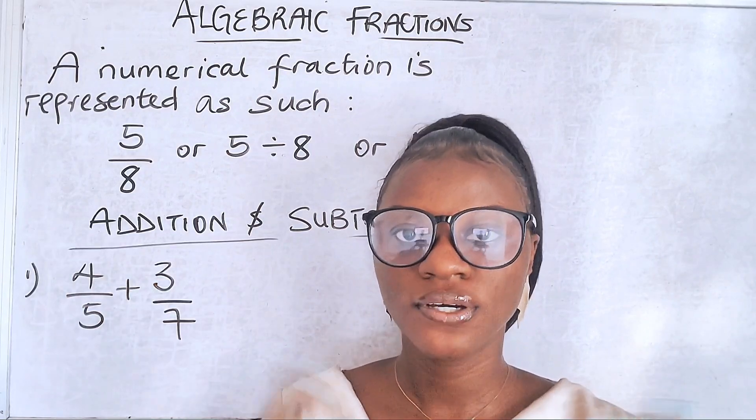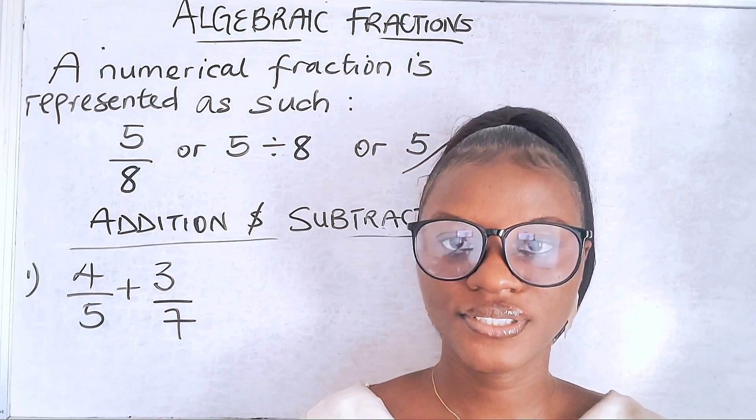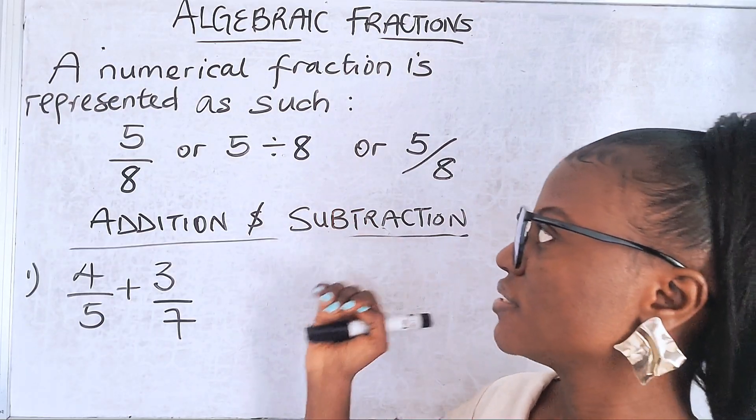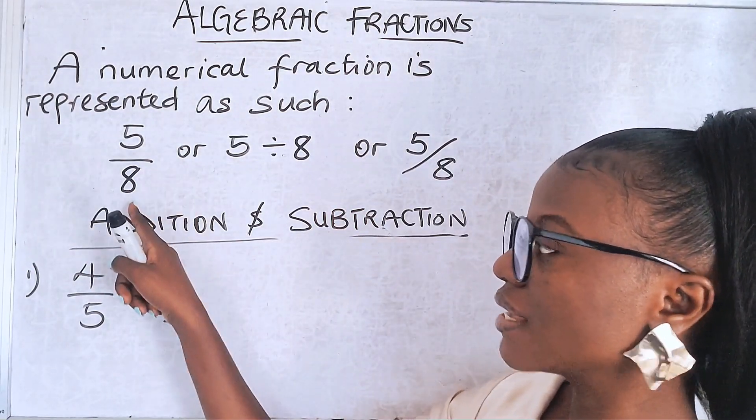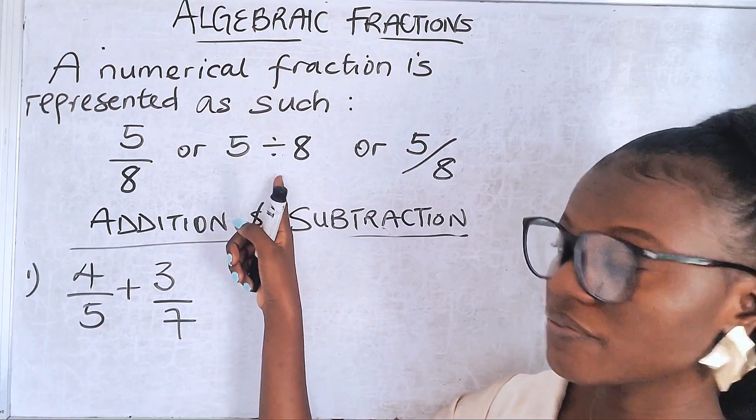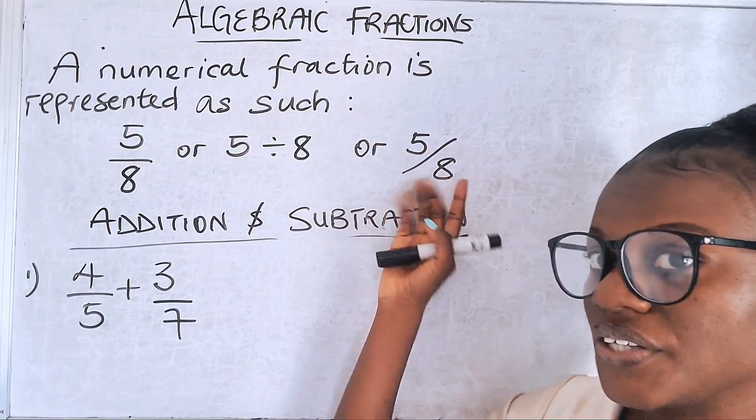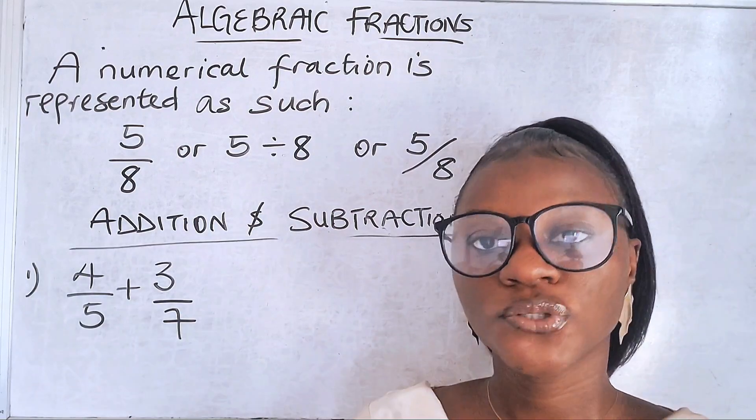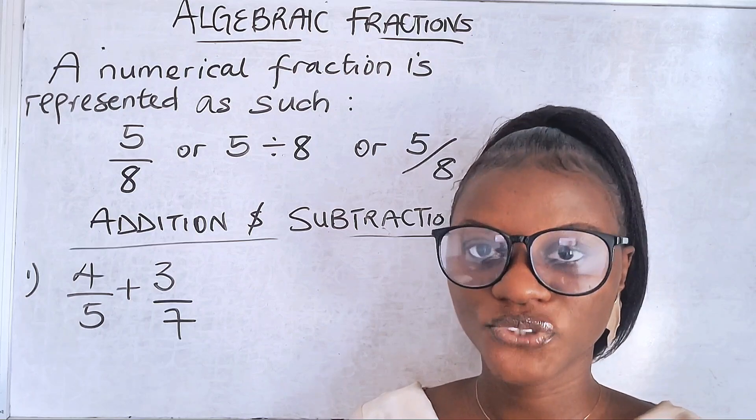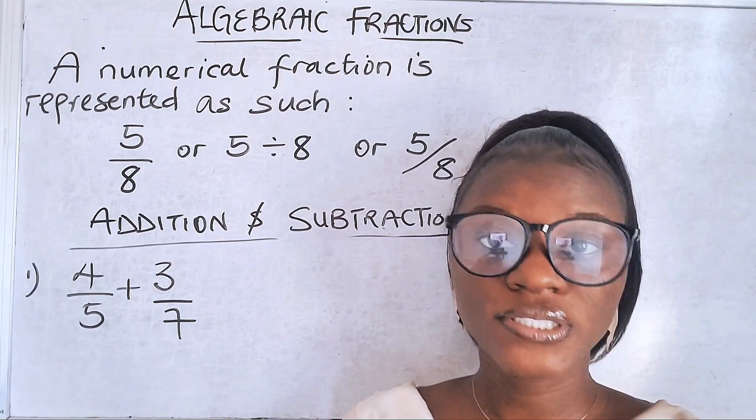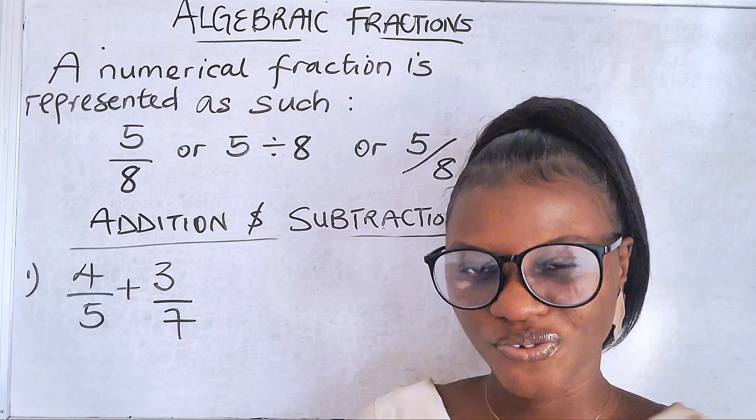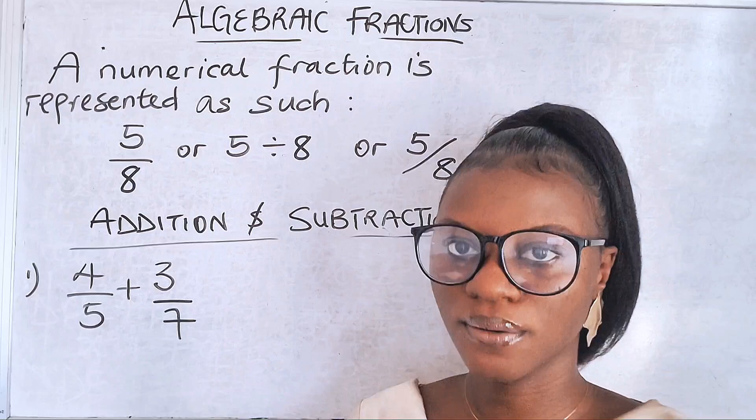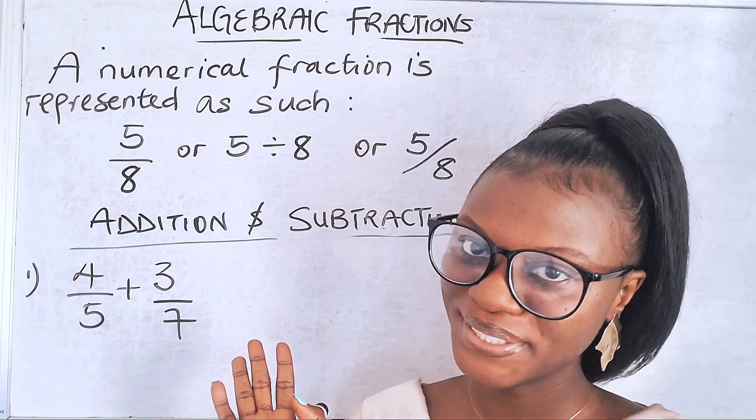Algebra in mathematics basically talks about numbers and letters. Now we're doing fractions. A fraction is a case where you have the numerator and the denominator, like you see here. A numerical fraction is represented as 5 over 8, which can also be written as 5 divided by 8 or 5 slash 8. However it's written, it all means the same thing. We're going to be learning how to add and subtract fractions, and in the next class we'll learn how to multiply and divide algebraic fractions.